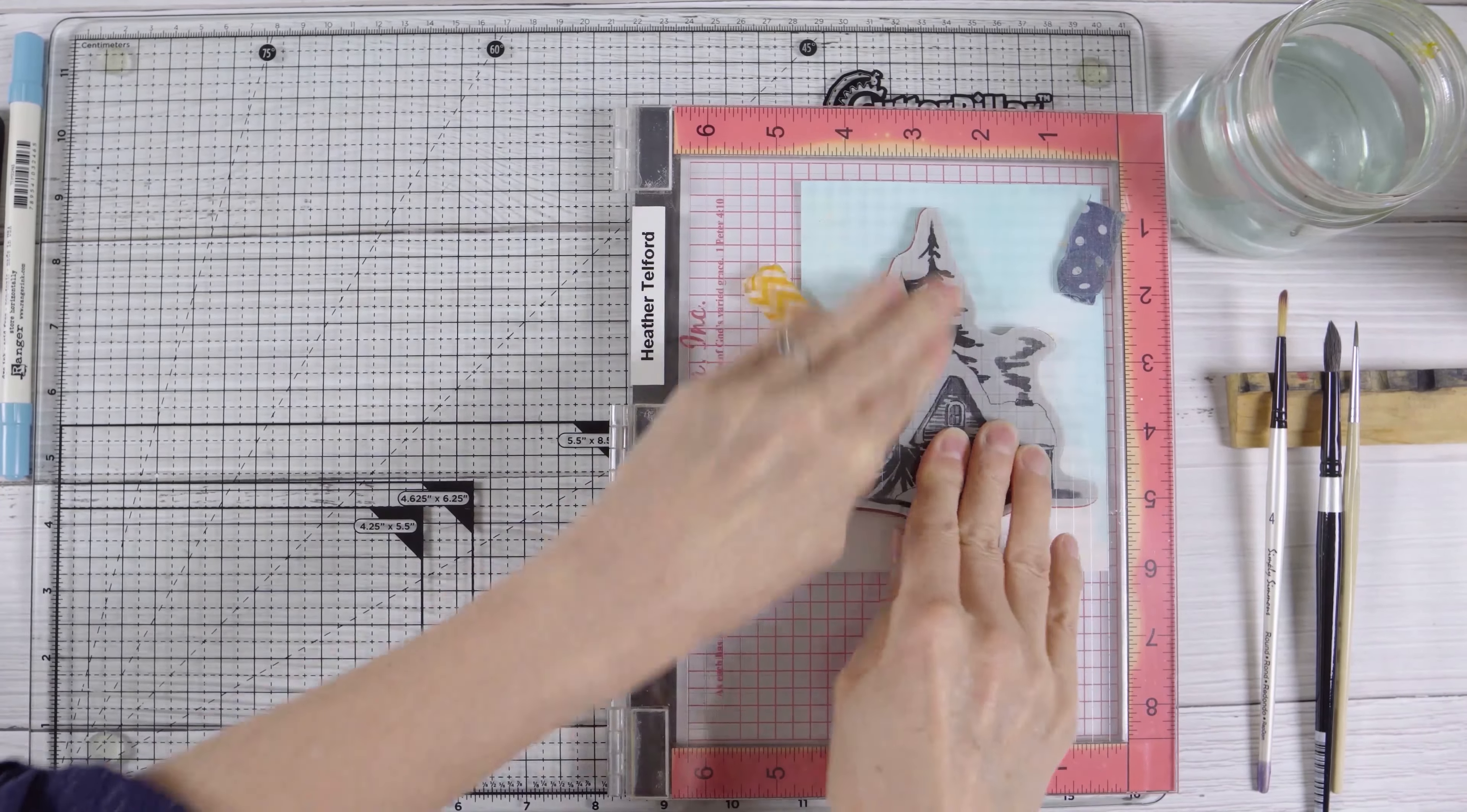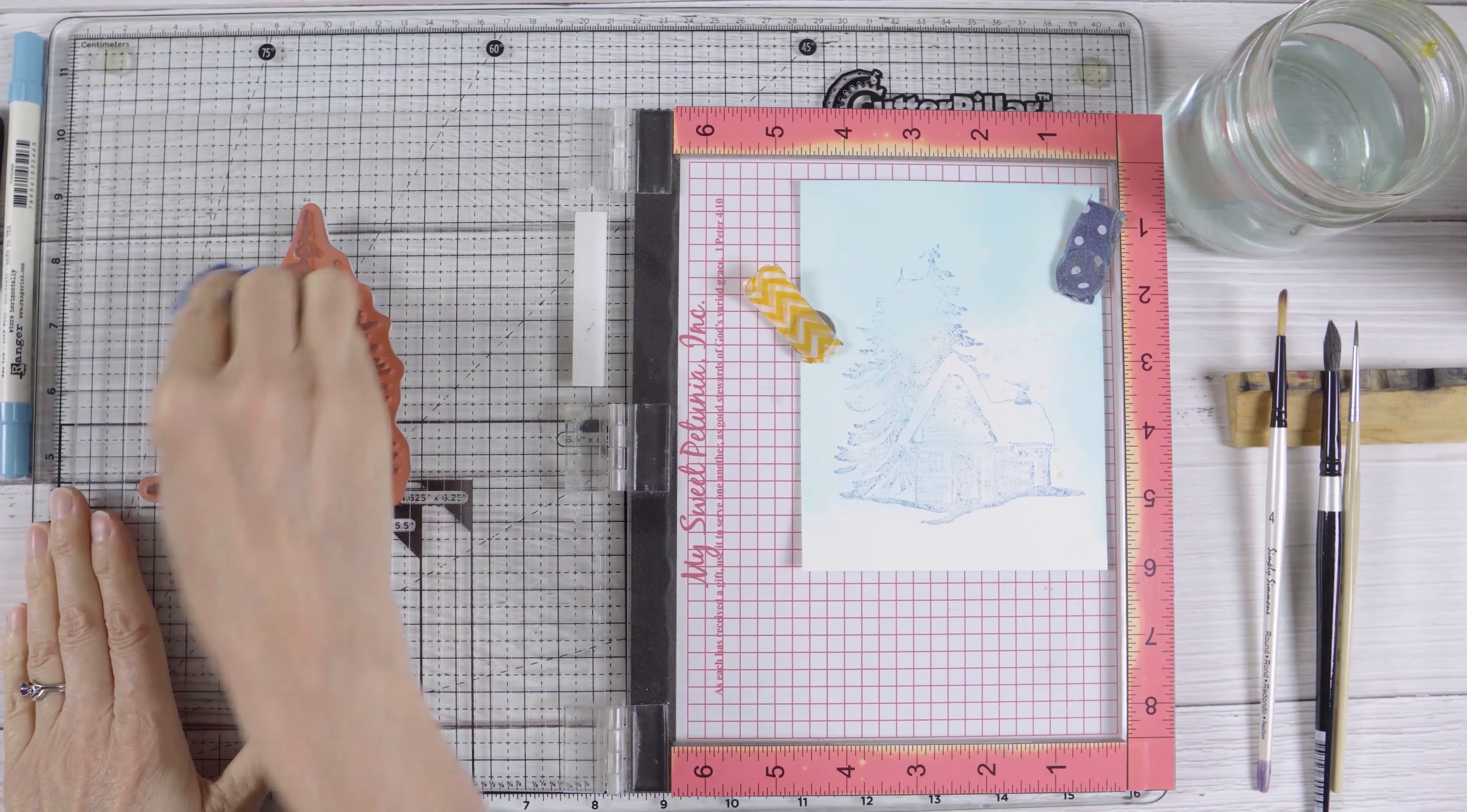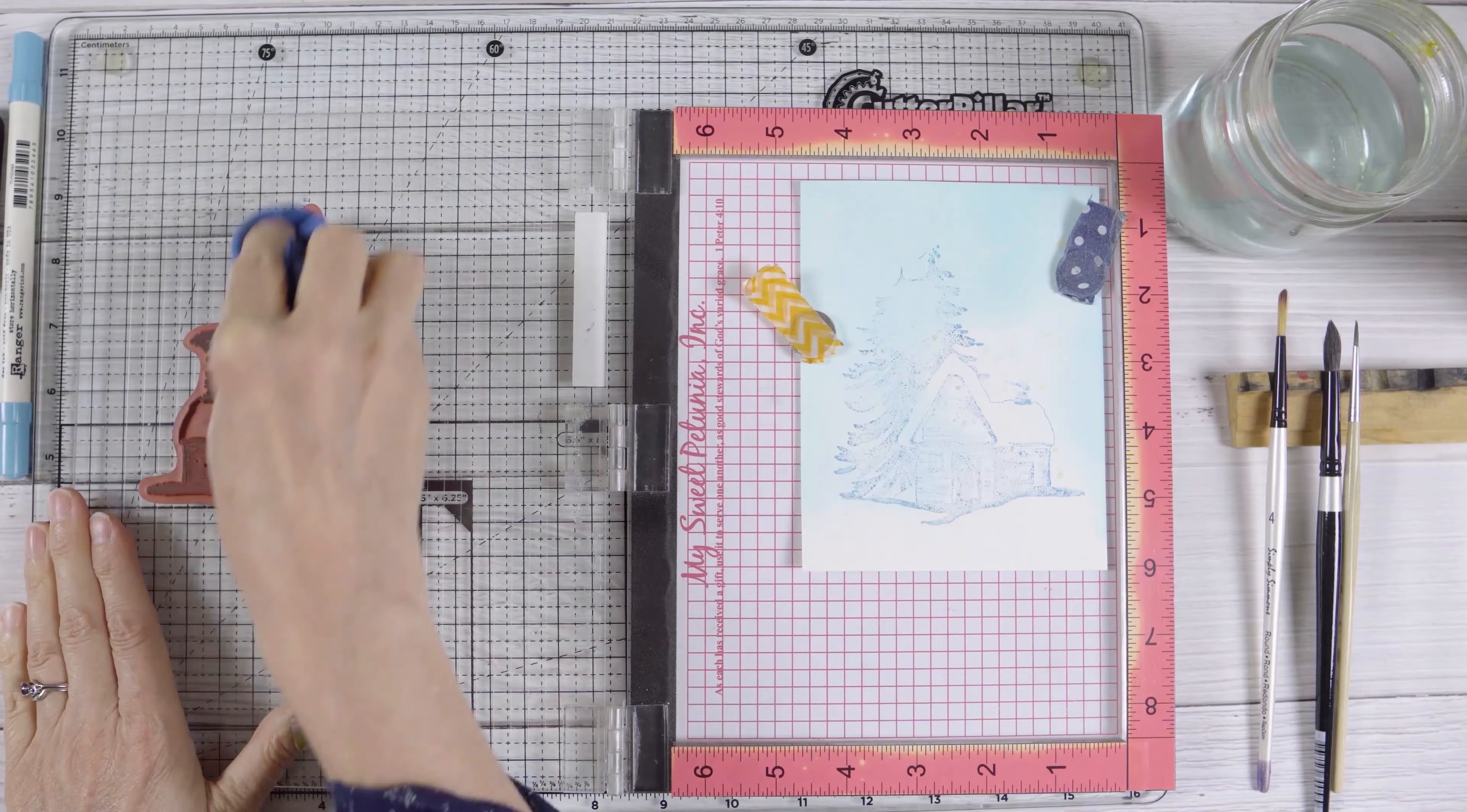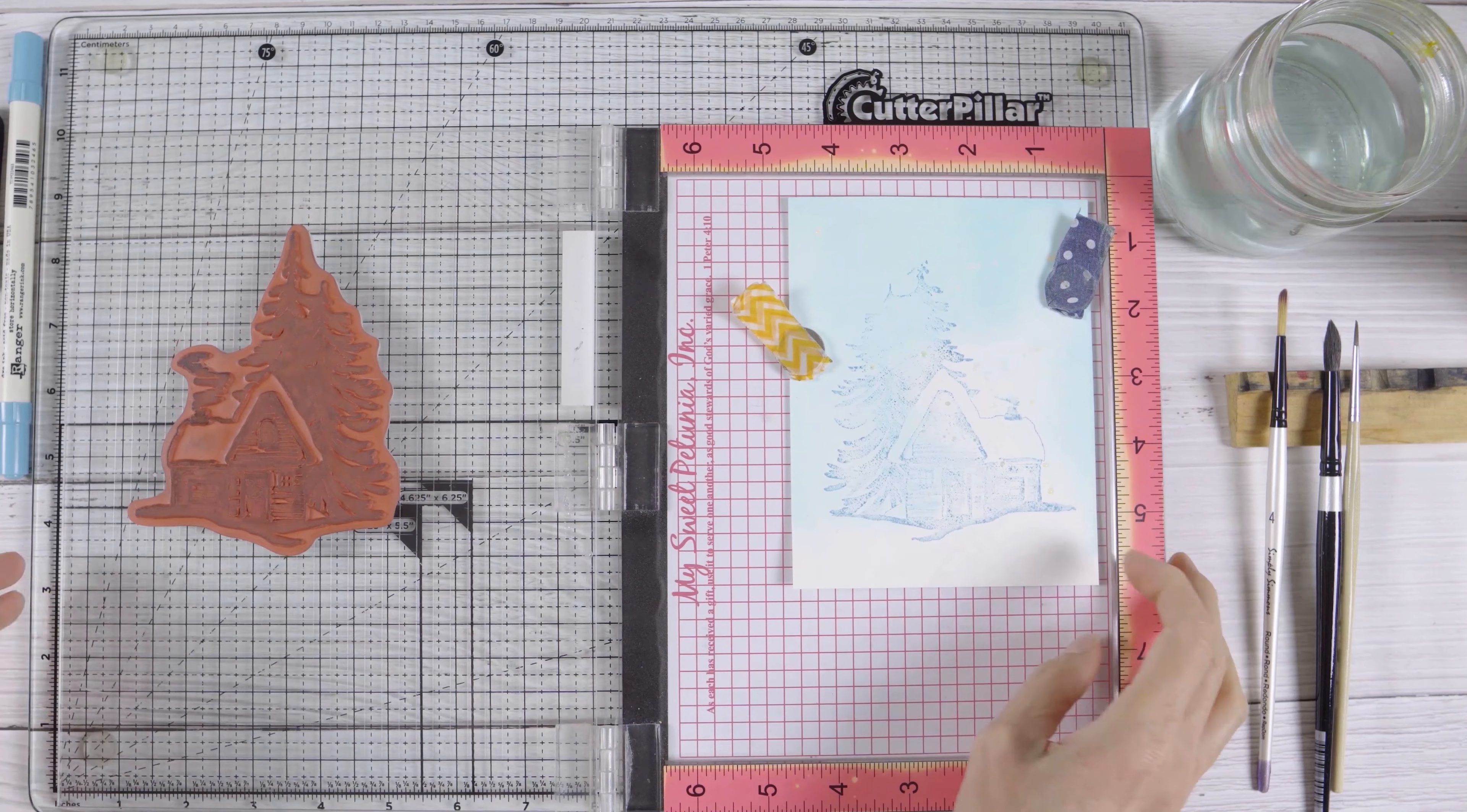Having this pale image already stamped gives me an idea of what I'm working with, where I want to add the color. I also have stamped the image on a piece of scratch paper in a dark ink so I have a reference.